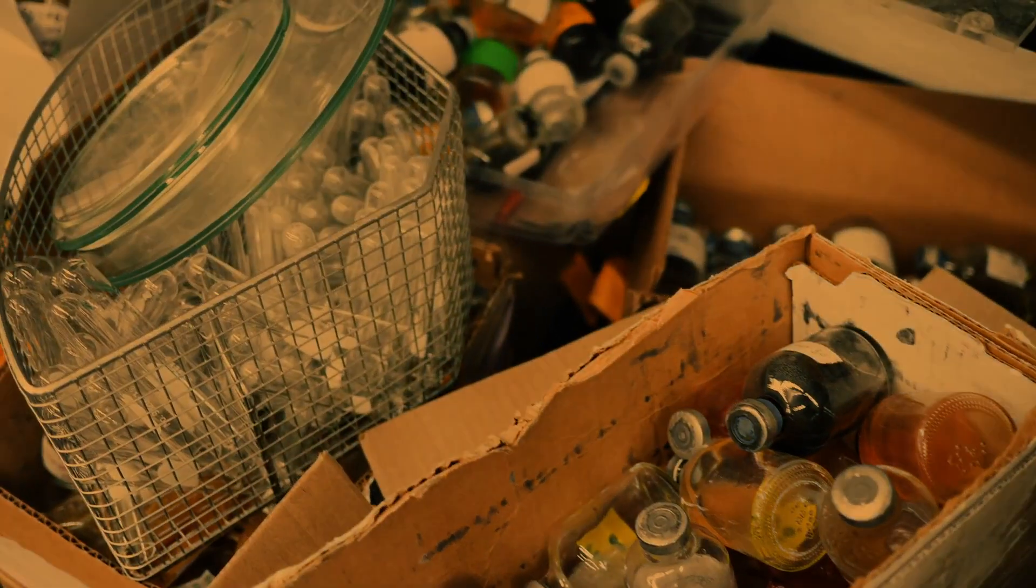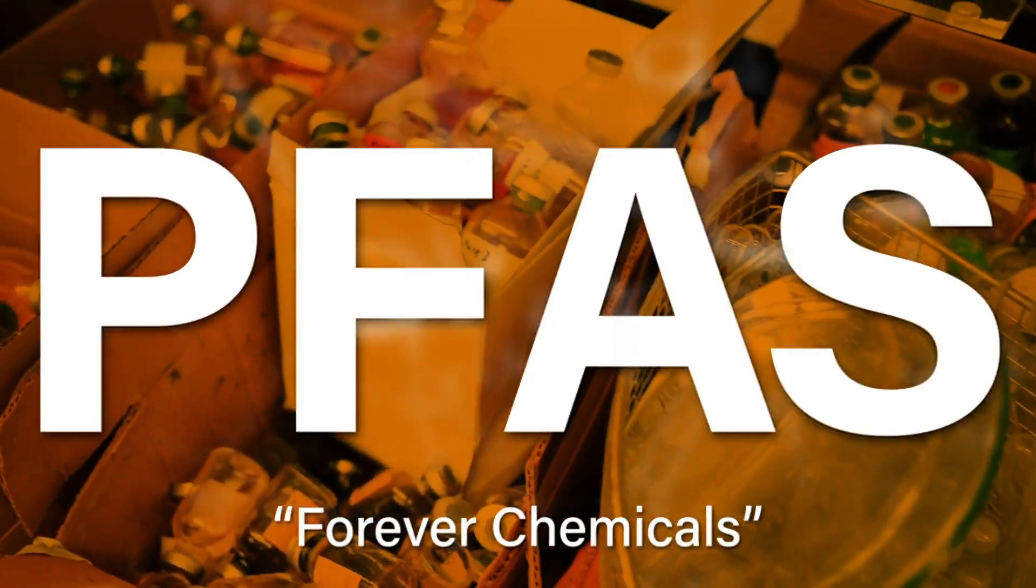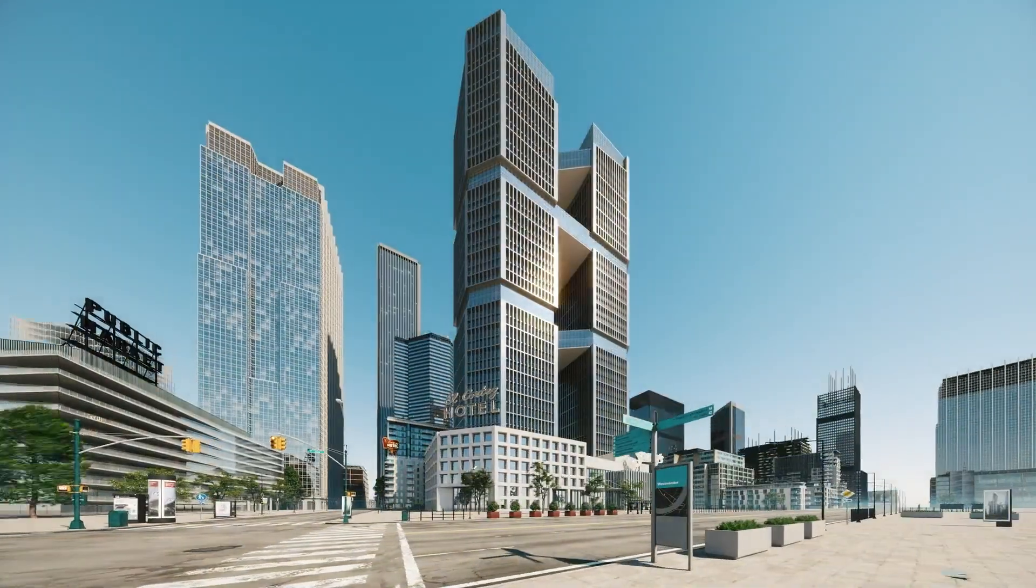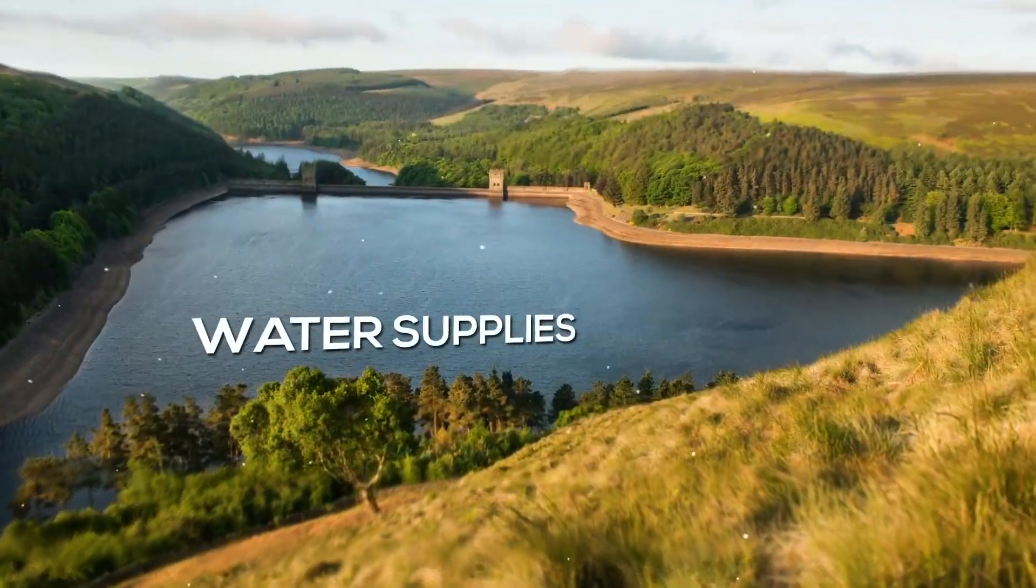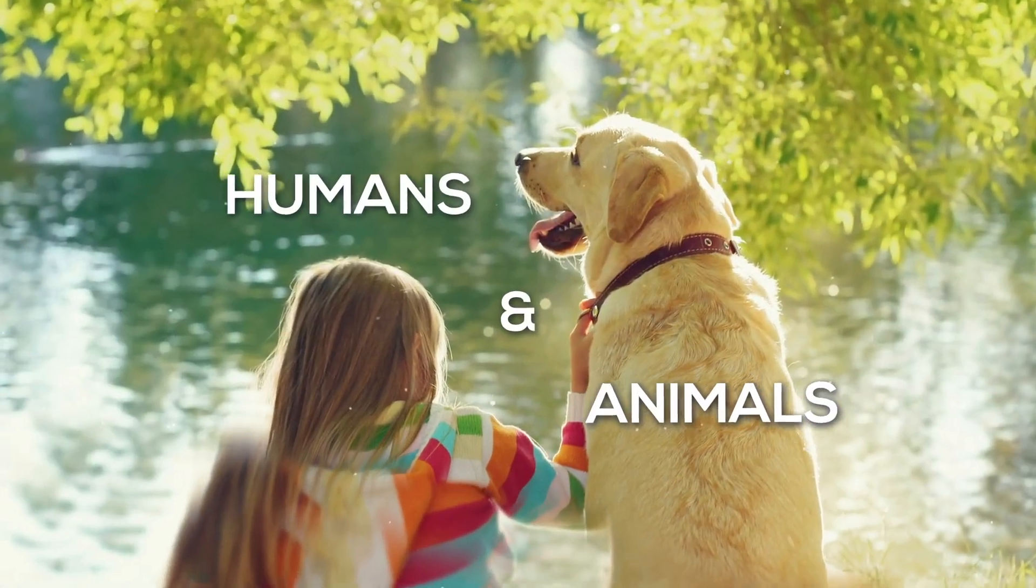A class of chemicals called per and polyfluorinated alkyl substances, or PFAS, are commonly referred to as forever chemicals because they're very persistent and they're found virtually everywhere in global water supplies, soil and air, and even the blood of humans and animals.